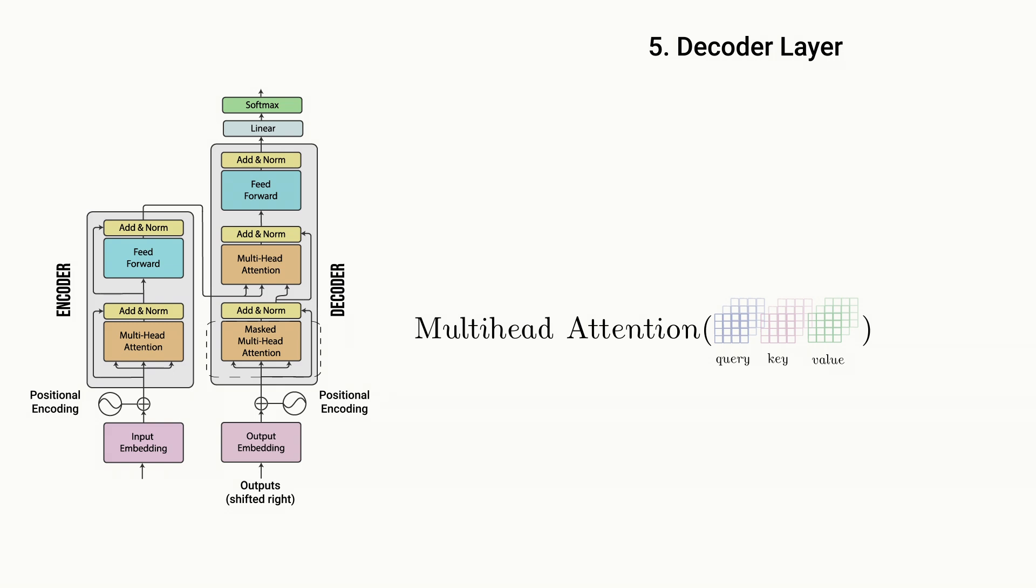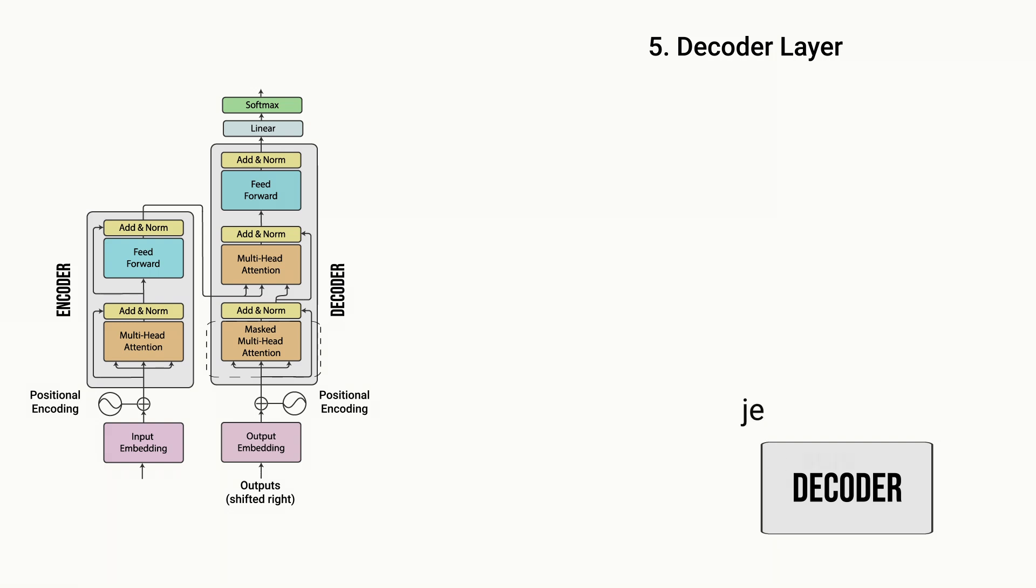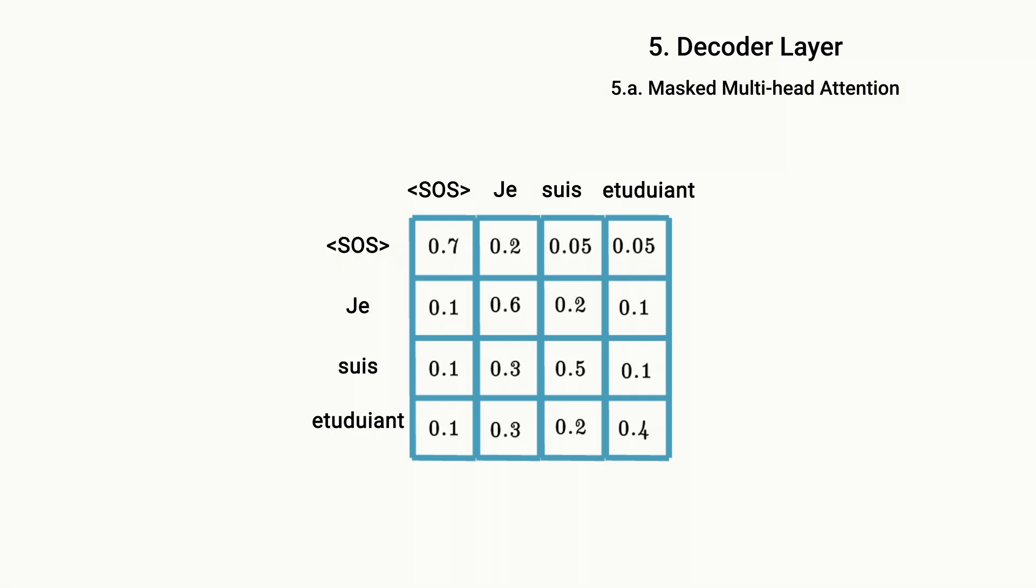This multi-head attention layer also does self-attention like we mentioned in the encoder layer by computing the attention scores for the decoder input, but it does this with a slight twist. Since the decoder is autoregressive, meaning that it generates the output word by word, it shouldn't be allowed to compute the attention scores on any future tokens. For example, when computing attention scores for the word suis, the scoring matrix should not have access to the word etudiante because this is a future word to be generated next, and instead it should only have access to itself and the words before it.